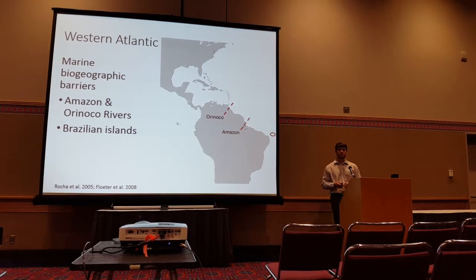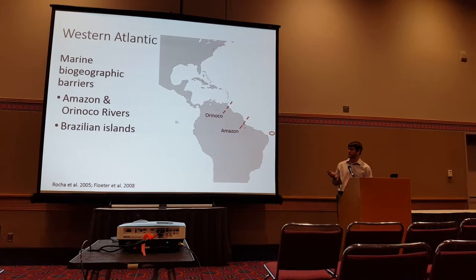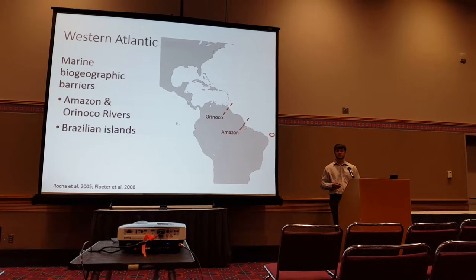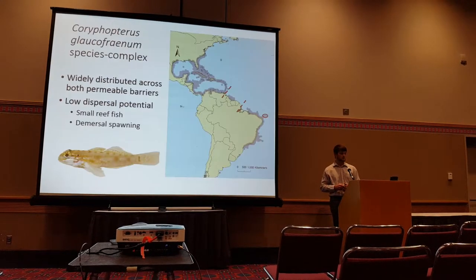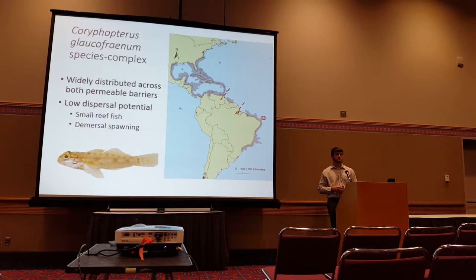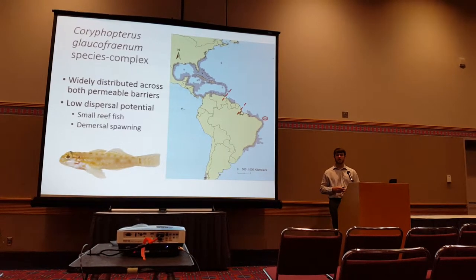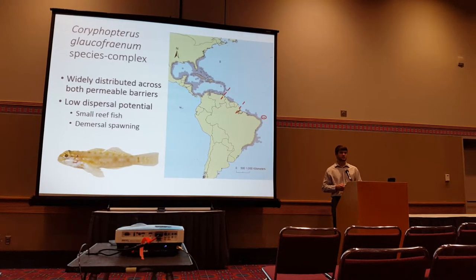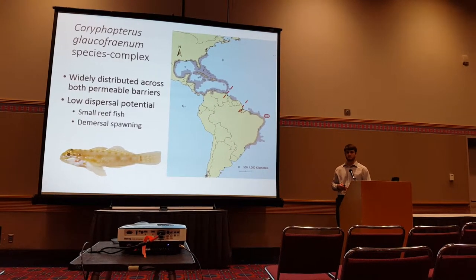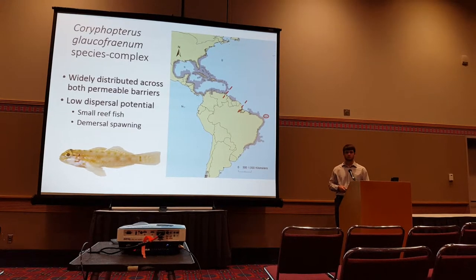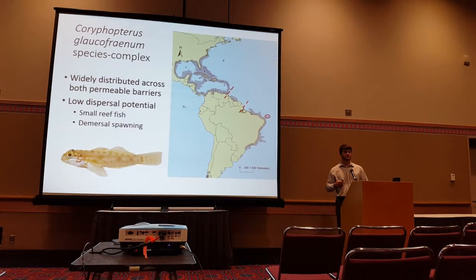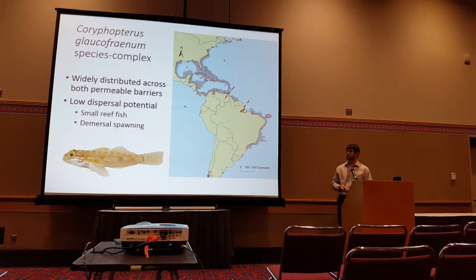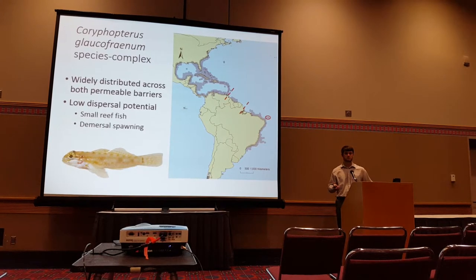A slightly lesser known barrier are these isolated oceanic islands off the coast of Brazil, which are known to harbor several undescribed species. I've decided to use the Coriopopterus glochophranum species complex as my model system because it spans both of these biogeographic barriers and also has limited dispersal potential. Coral reef fish are known to be largely sedentary as adults and do most of their dispersing as larvae, and they are also very small, giving them very low dispersal potential.